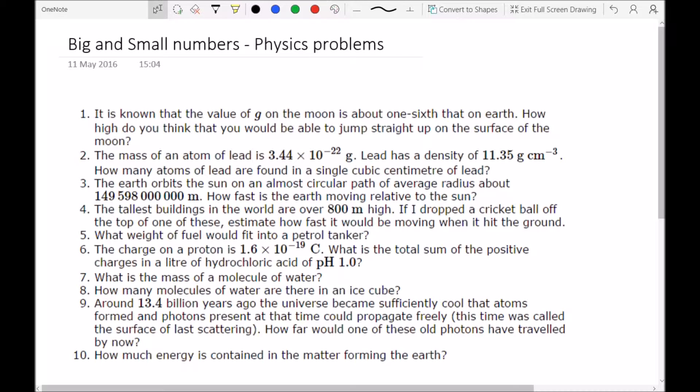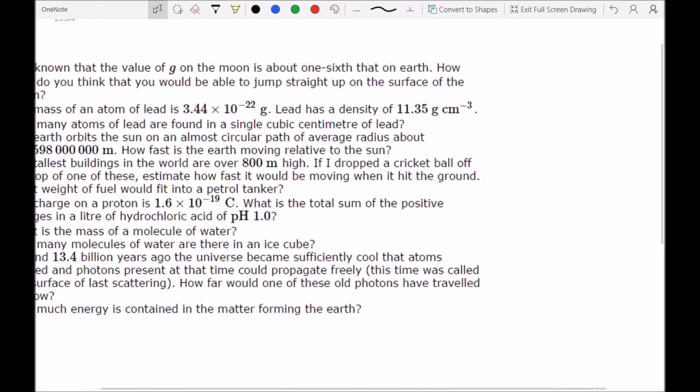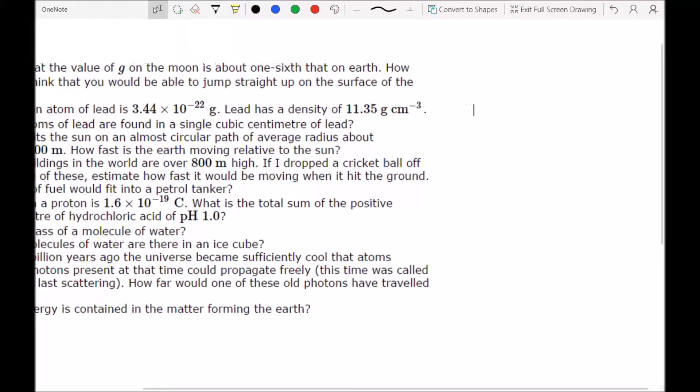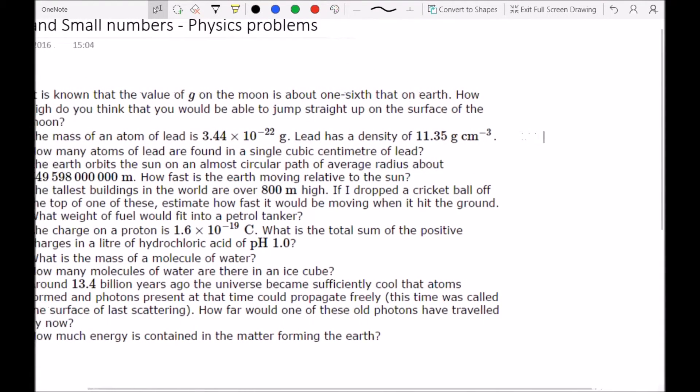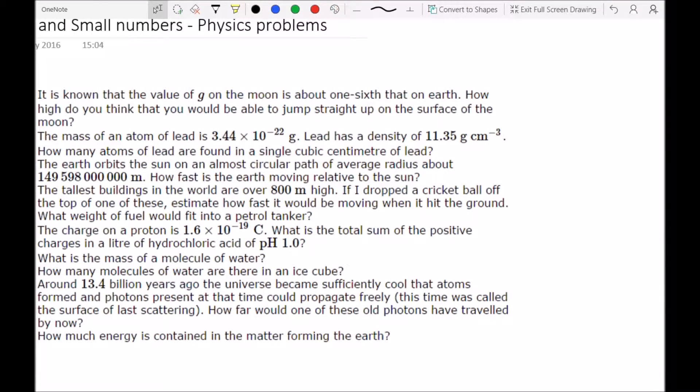So if we start off with the first one, it's known that the value of g on the Moon is about one sixth of that on Earth. How high do you think you'd be able to jump straight up on the surface of the Moon? So you need to find some way of relating the height that you jump with the acceleration.